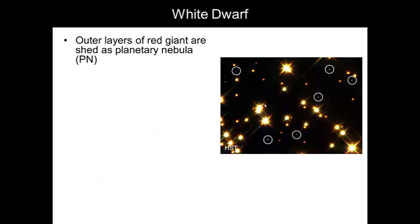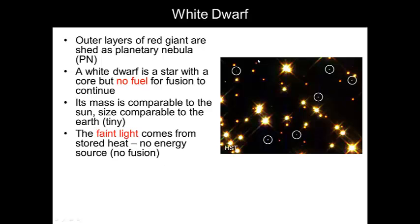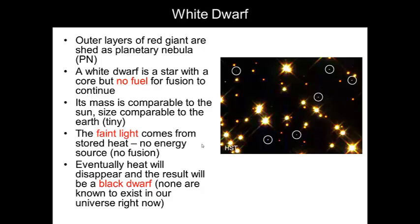In a white dwarf, the outer layers of the red giant are shed as planetary nebulae, so those go off and eventually become the birthplace of new stars. A white dwarf is a star with a core but no fuel for fusion to continue. Its mass is comparable in size to the sun, but its size is comparable to the Earth, so it's very small. There is a faint light that comes from stored heat, but there is no energy source. Eventually, the heat will disappear and the result will be a black dwarf. None are known to exist in our universe right now.